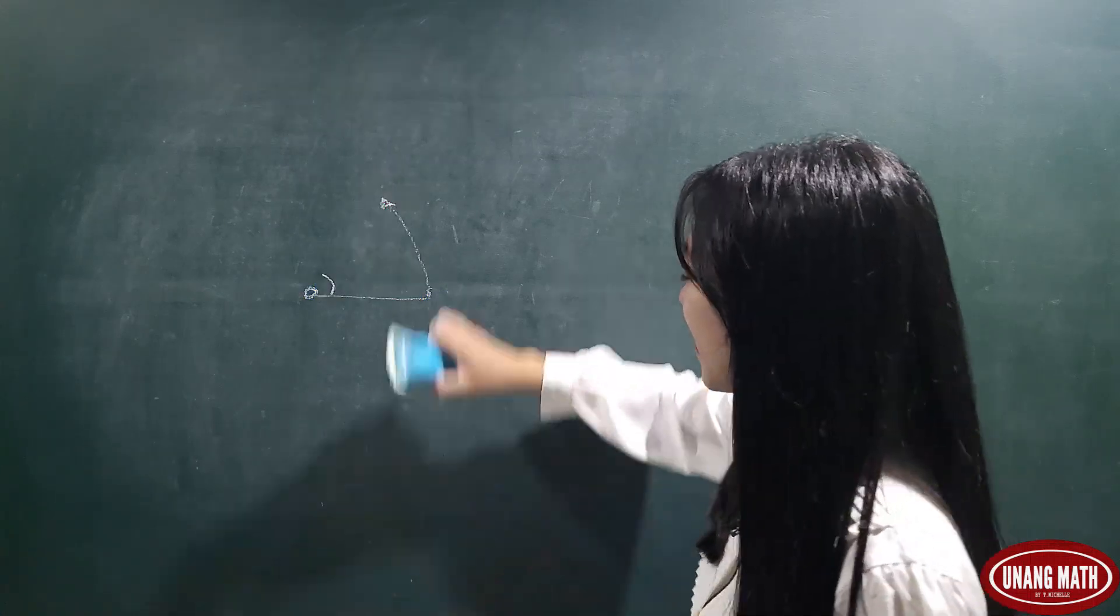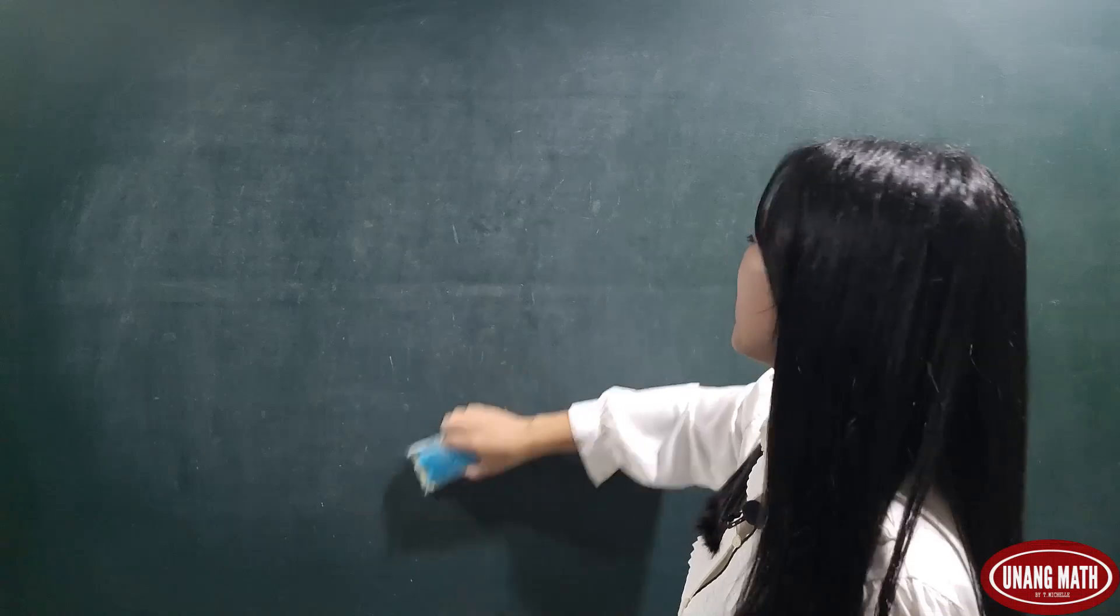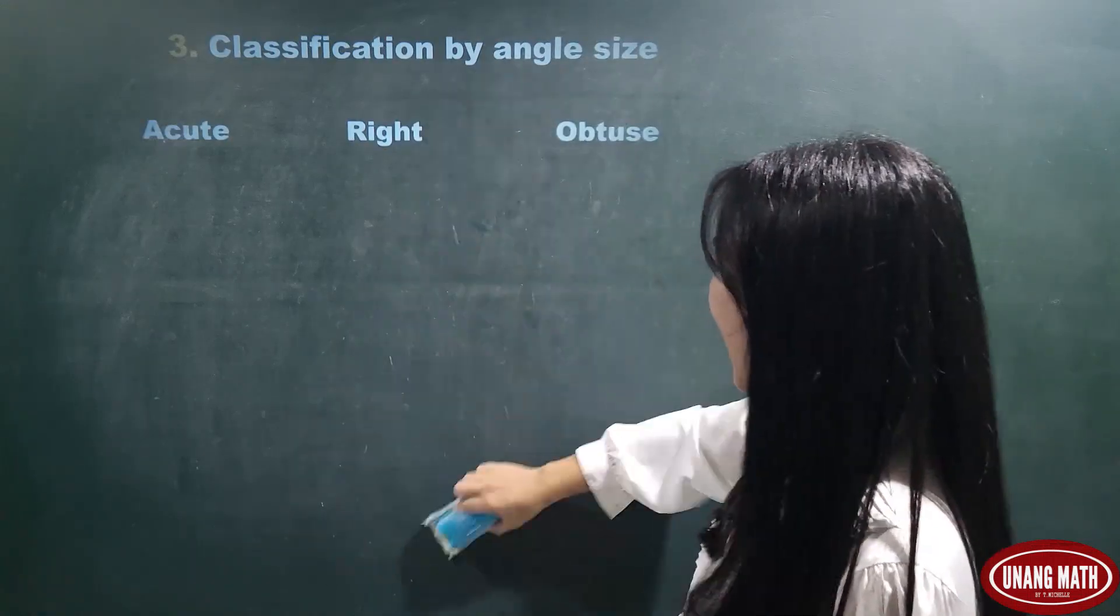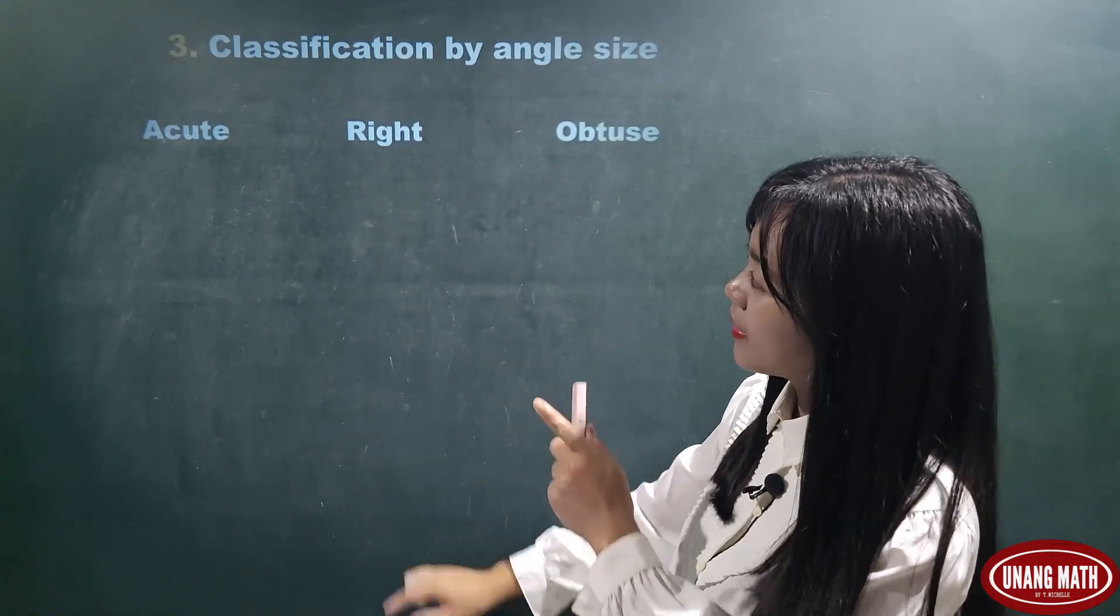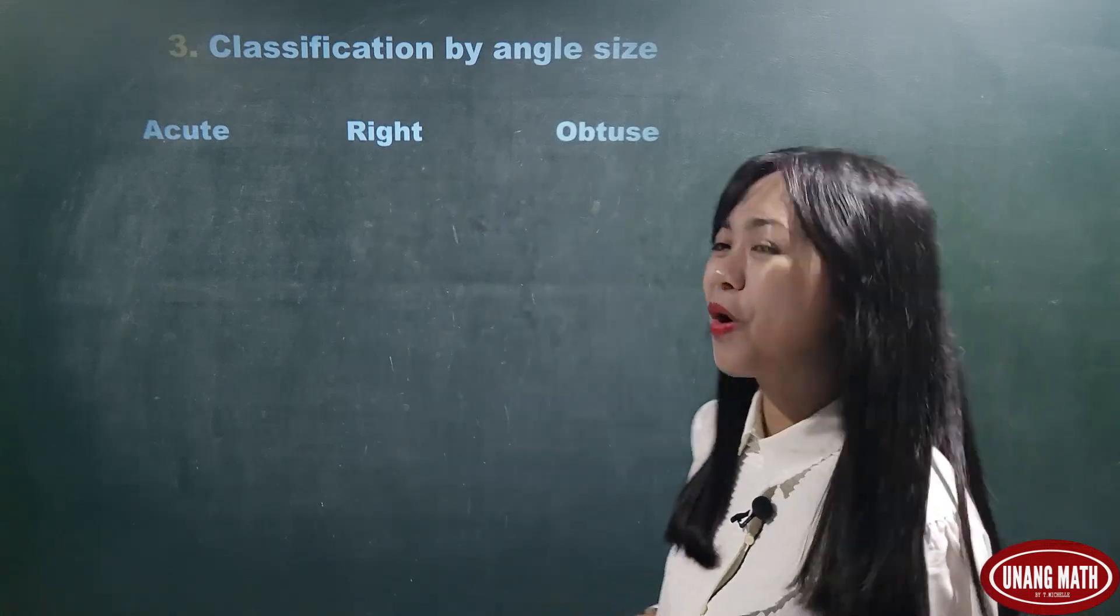Okay, angle can be classified according to size. We can name them as acute angle, right angle, or obtuse angle.